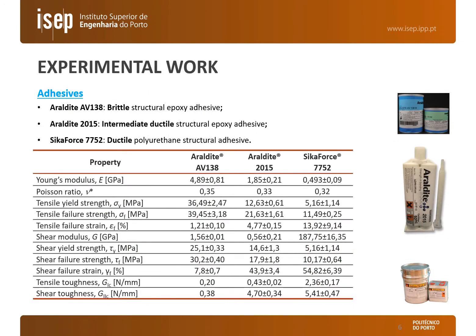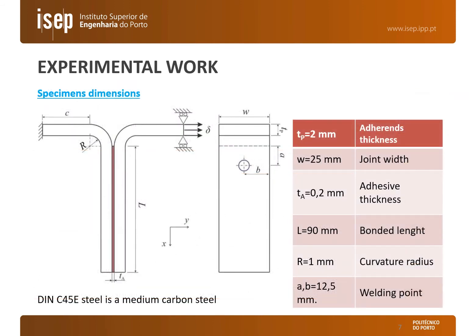In this work, three structural adhesives were tested in the bonded and hybrid joints. The Araldite AV138 is a brittle epoxy adhesive with high strength. The Araldite AV2015 is a ductile epoxy adhesive that, although showing smaller mechanical properties than the AV138, due to its ductility enables improved load transfer at highly loaded regions. The SikaForce 7752 is a ductile polyurethane-based adhesive with smaller strength than the former adhesives but with high elongation. As the adherend, we selected the C45E carbon steel.